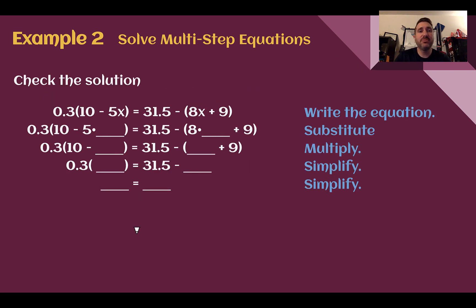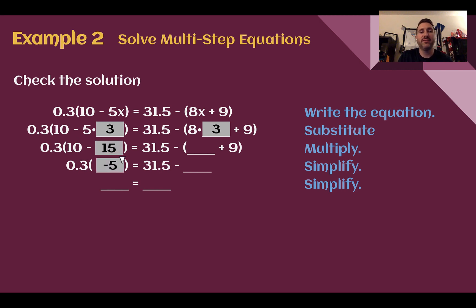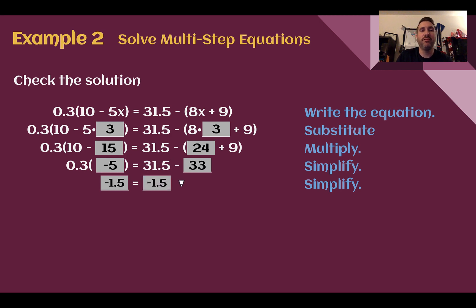We need to check our solution by substituting x equals 3 in for our variable and calculating it out. 5 times 3 is 15; 10 minus 15 is negative 5; 3 tenths times negative 5 is negative 1.5. On the right side: 8 times 3 is 24, plus 9 is 33; 31.5 minus 33 is also negative 1.5. We got the same thing — it's a true statement, so our solution must be correct.